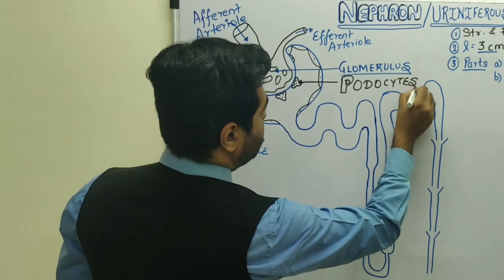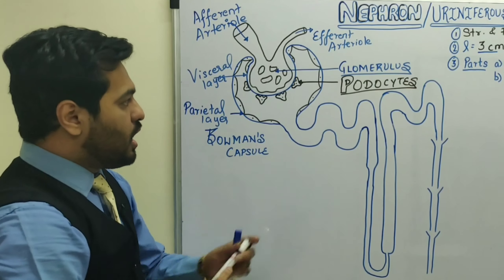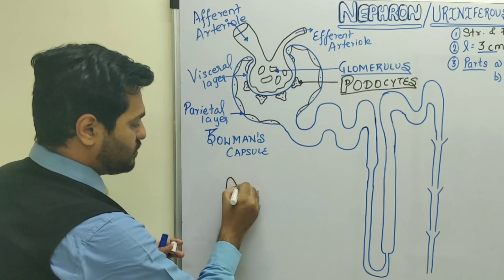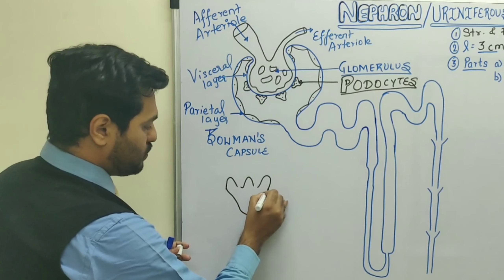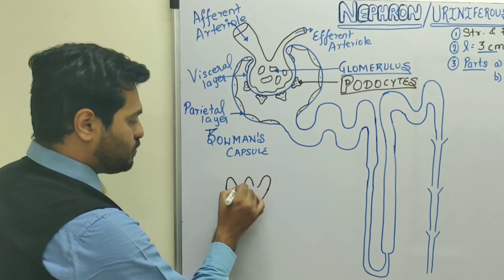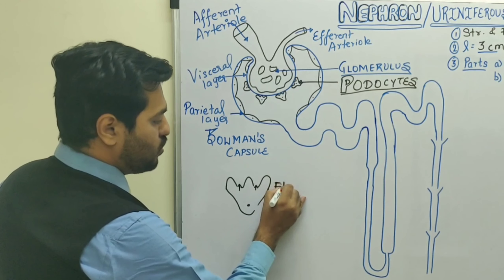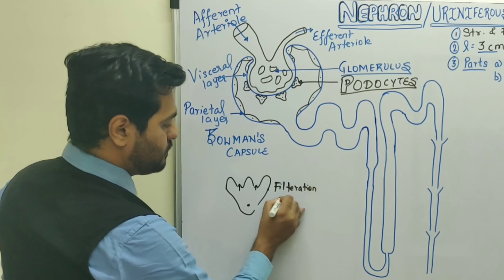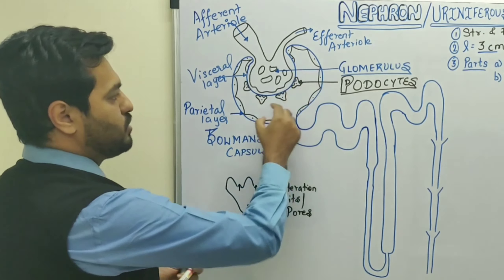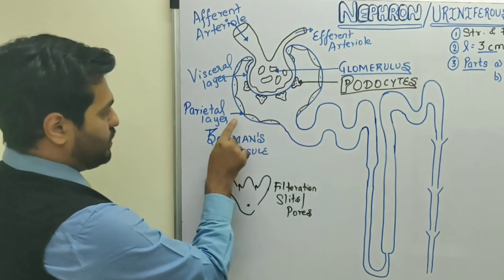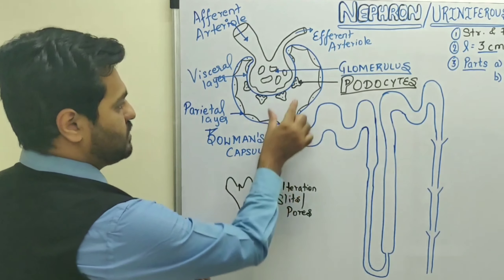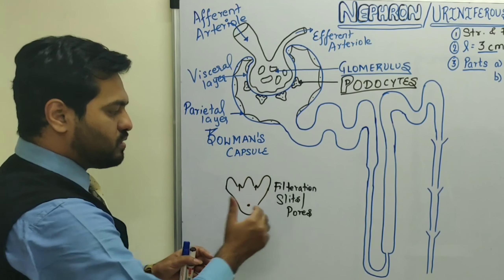Podocytes are very important cells lining the inner visceral layer. These cells have extensions of foot-like processes, which is why we call them podocytes. They also have openings known as filtration slits or filtration pores, through which blood is filtered and collected in Bowman's capsule. The space between the outer parietal layer and inner visceral layer is known as the capsular space, or urinary space, where the filtrate collects.